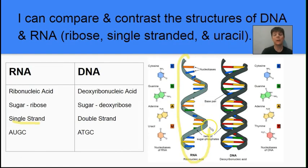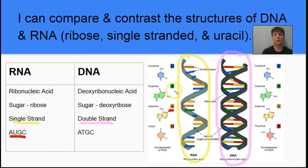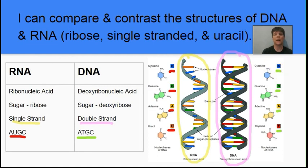Our next learning target is to compare and contrast the structure of DNA with the structure of RNA. RNA is a single-stranded molecule (I've circled that in yellow) and DNA is a double-stranded molecule (circled in pink). RNA contains the sugar ribose; DNA contains the sugar deoxyribose. RNA contains the bases A, U, G, and C, while DNA contains the bases A, T, G, and C. The main differences are: RNA contains ribose, it is single-stranded, and it has the base uracil.